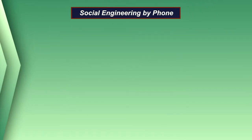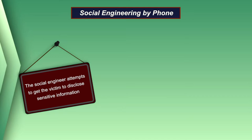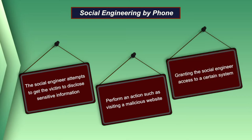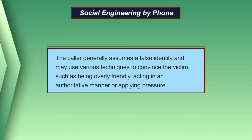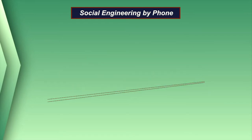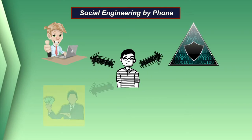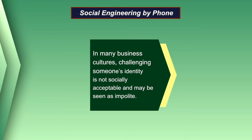Now let us discuss social engineering by phone. The social engineer attempts to get the victim to disclose sensitive information or perform an action such as visiting a malicious website or granting access to a certain system. The caller generally assumes a false identity and may use techniques such as being overly friendly, acting in an authoritative manner, or applying pressure. The caller may purport to be from tech support, an antivirus organization, a financial institution, or even a charity. In many business cultures, challenging someone's identity is not socially acceptable, so assuming a false identity may be easier than you think.